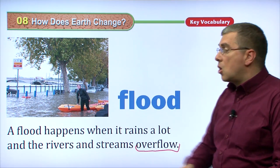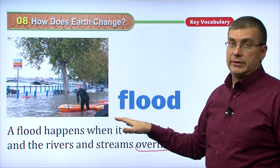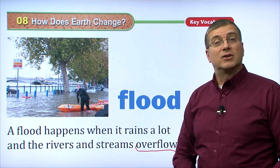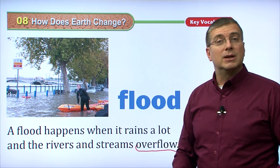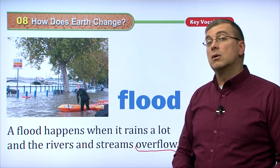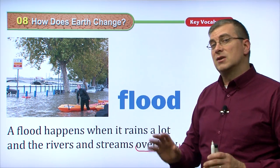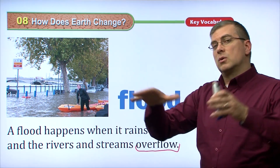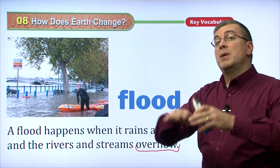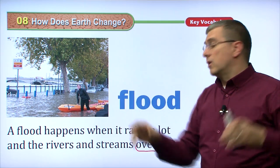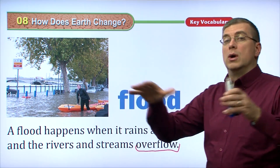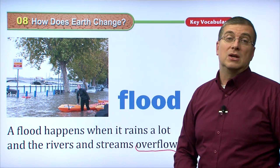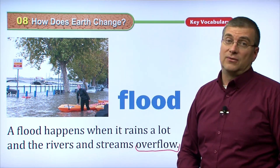They flow over their banks. So if you live in a city, whether it has a river running through it or that's near a river or streams, it rains a lot, especially during the summer months, those rivers will get too big and they'll come over — they will overflow their banks and flow into your town or into your city. And that's a flood.